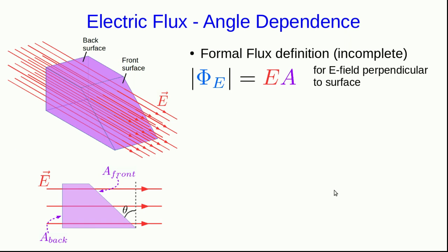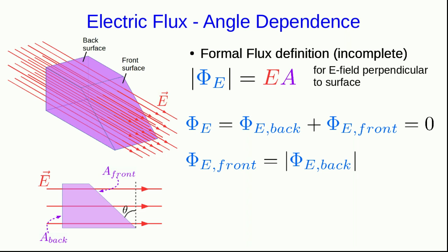That argument that the total flux through this surface is zero is the key argument we need to figure out our angle dependence. So note that this means that the flux through the back, which is negative, plus that positive flux through the front is zero, or in other words, the flux through the front is just the absolute value of the flux through the back.